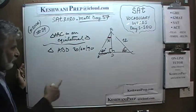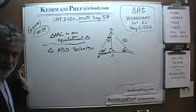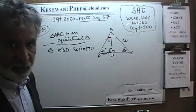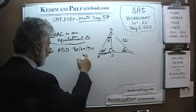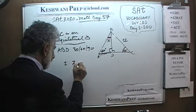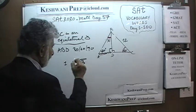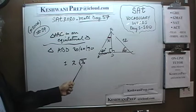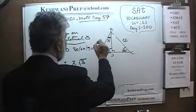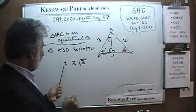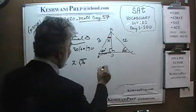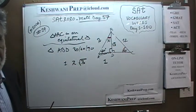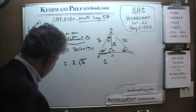In a 30-60-90 triangle, there are three different types of angles: 30, 60, and 90. Here is the mnemonic I use: write down 1, 2, and 3, then put the root sign on the last one. So the sides are 1, 2, and root 3. The highest among them is 2 — that is the hypotenuse. The smallest is 1, which faces the smallest angle, 30. And the remaining side is root 3.